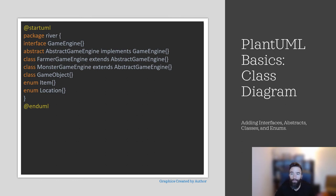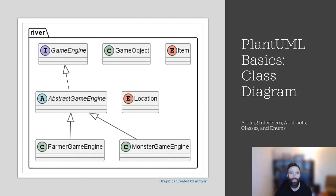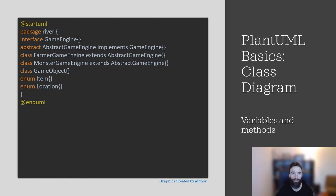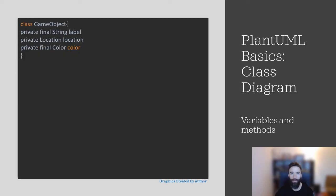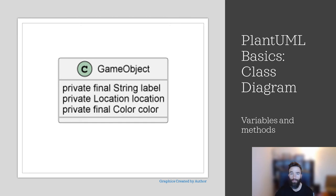The other method uses arrows. You can find more information on this and other PlantUML methods in the link on the reference slide. Here we see our diagram is depicted exactly how we expected: the AbstractGameEngine implements the GameEngine interface, and the FarmerGameEngine and MonsterGameEngine extend the AbstractGameEngine class. The implementation is denoted by a dashed line, whereas the extension is depicted using a solid line. Both the GameEngine interface and the AbstractGameEngine are italicized by PlantUML to distinguish them from regular classes. Now let's add more detail to our classes — in particular, the GameObject class as we work through adding variables and methods. All three variables are private and PlantUML will automatically organize the variables in the first section of the UML box.